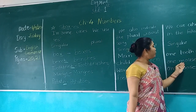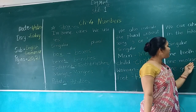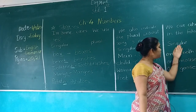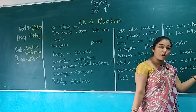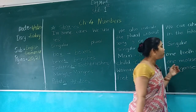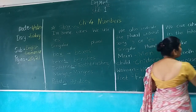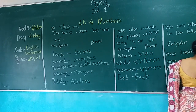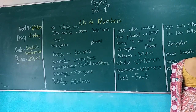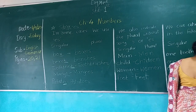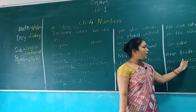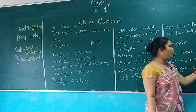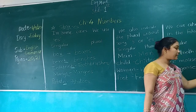Mouse. M-O-U-S-E. It is singular. What is the plural form of mouse? Mice. Two mice. M-I-C-E. One mouse — two mice.